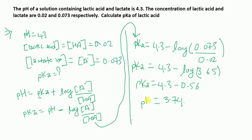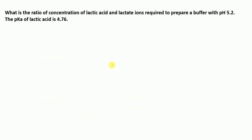The answer to the first question is pKa = 3.74. Moving to the next problem: what is the ratio of concentration of lactic acid and lactate ions required to prepare a buffer with pH 5.2? The pKa of lactic acid is 4.76. We are given pKa = 4.76 and pH = 5.2, and we need to find the ratio of concentrations.